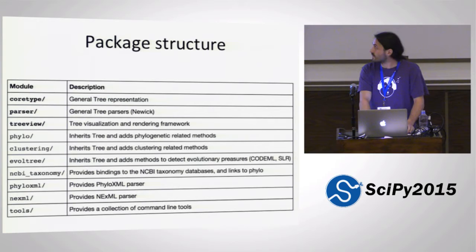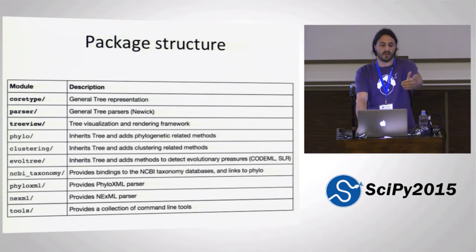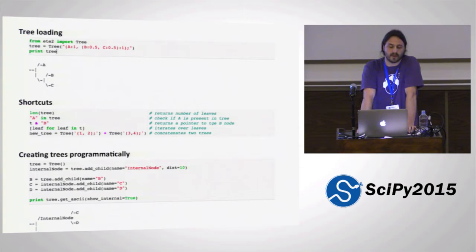There are several modules that extend the functionality, as you can see. Extending the functionality is as easy as creating a new module that inherits the tree, phylo tree, or clustering tree functionality, and you can write on top of this. So just to give you a very brief example of the logic behind ETE: all you need to do is import the tree class from the main package, load a tree — this is the Newick format, which is quite common in biology — and what you get is a Python object that you can operate with like any other class.